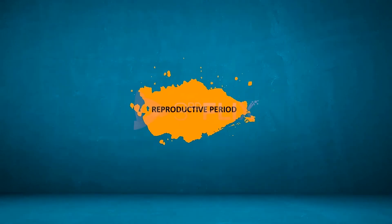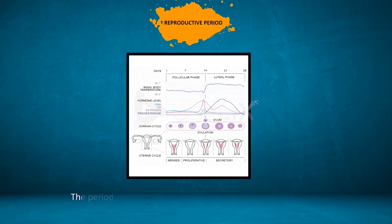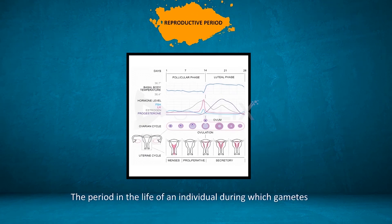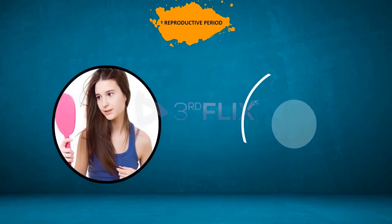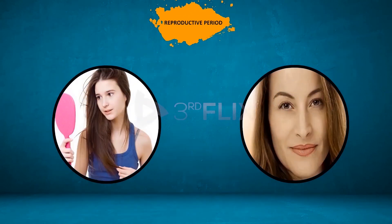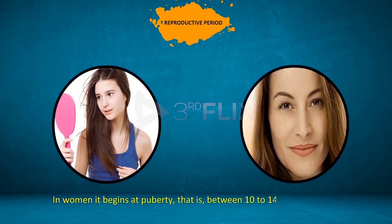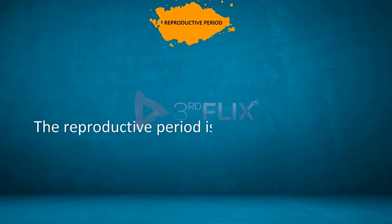Reproductive period: The period in the life of an individual during which gametes are produced is known as the reproductive period. In women, it begins at puberty, that is between 10 to 14 years of age, and ends between 45 to 50 years. The reproductive period is much longer in men.